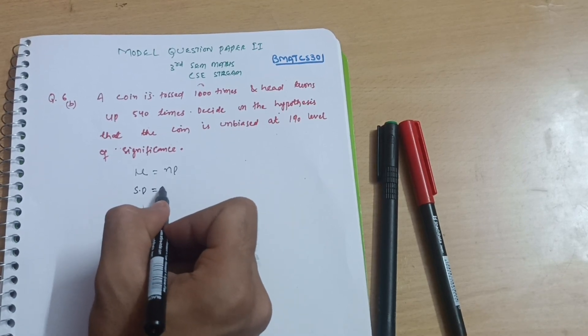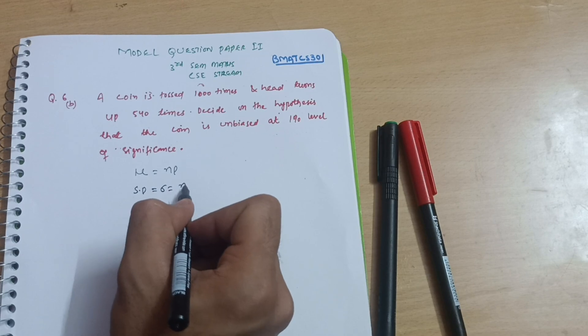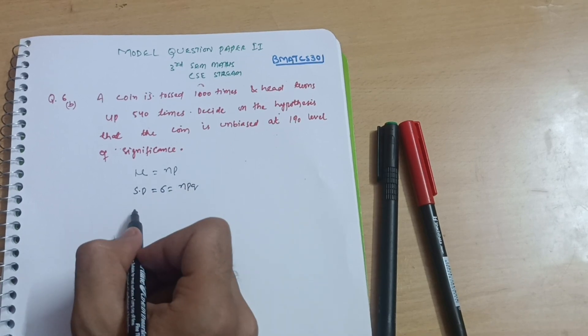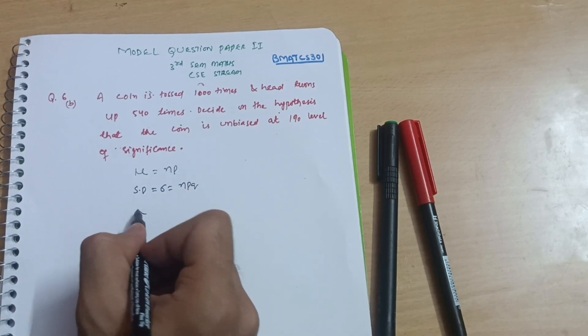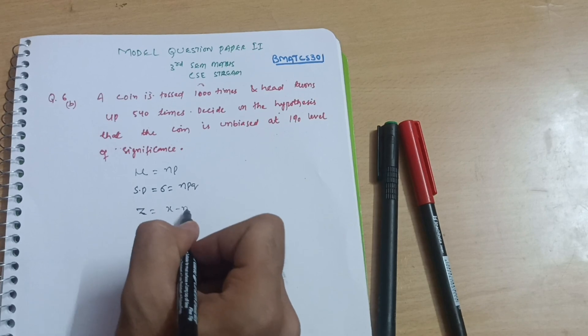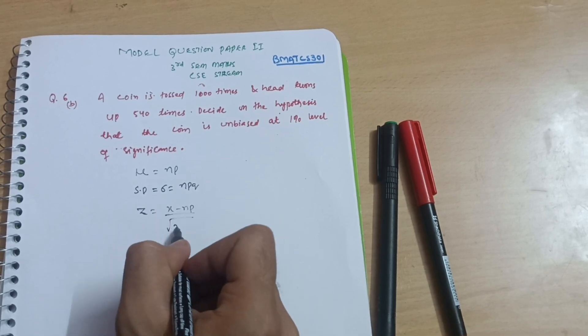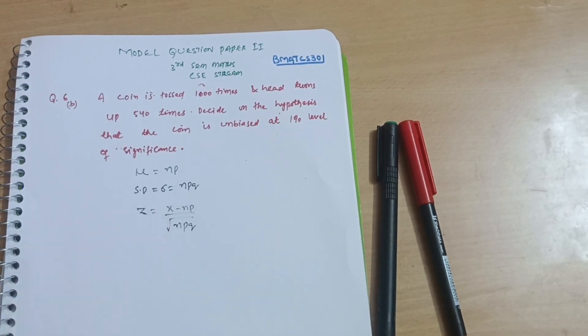Here mu equals np, and standard deviation equals sigma, which equals square root of npq. The formula for z is: z equals x minus np divided by square root of npq. These are the three formulas we usually use for these types of problems.